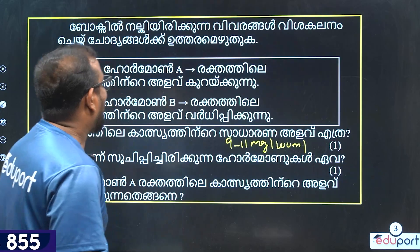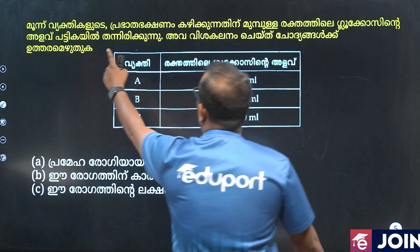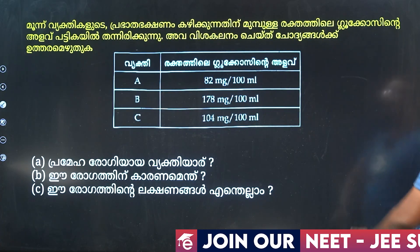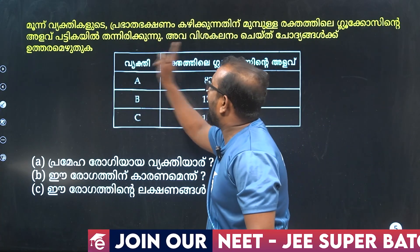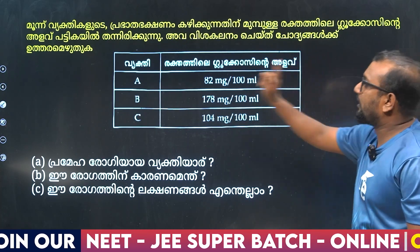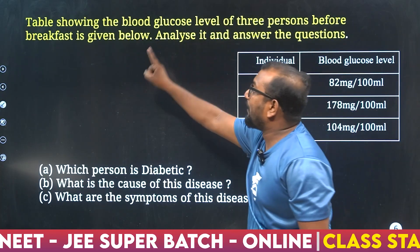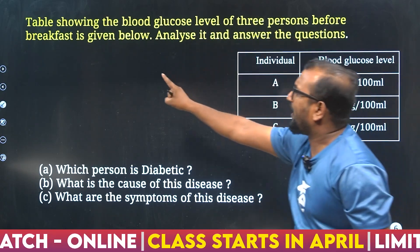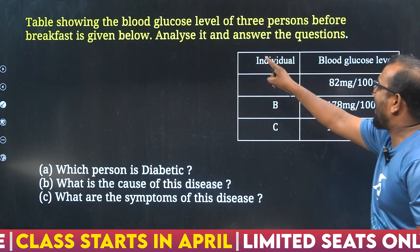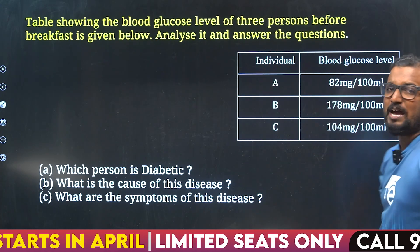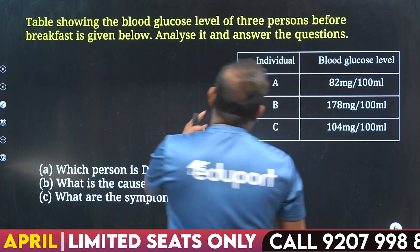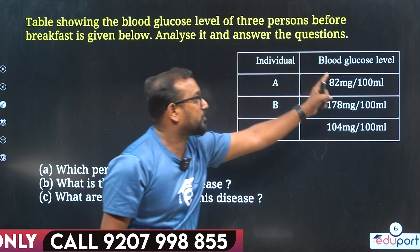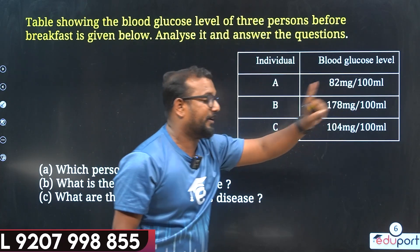Let's talk about three people who have increased blood glucose levels before breakfast as given below. Analyze it and answer the questions. The table shows individual A, B, C. A's glucose level is 82 mg per 100 ml.